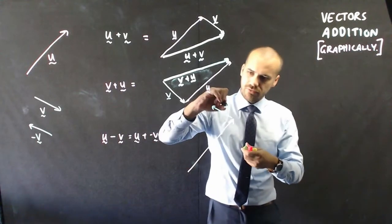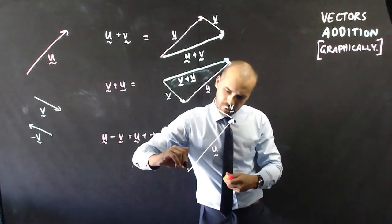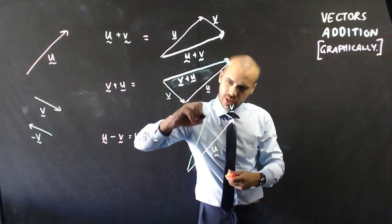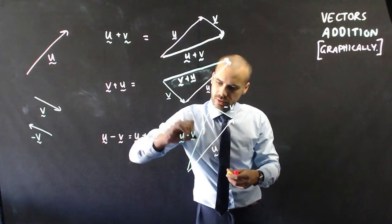Which means, if that's negative v, this new line from tail to head is u minus v.